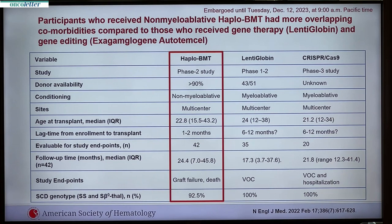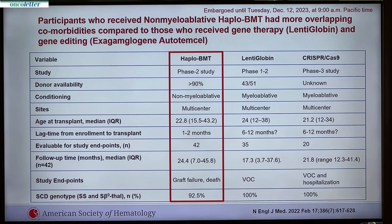All studies were multi-center trials. The median ages across studies were about the same. If you look at lead time — if you need a transplant or gene therapy and you show up with your brother or sister — we can get the haploidentical transplant done in a month. However, the technical expertise required for both lenti-globin and CRISPR gene editing makes these therapies unavailable for up to a year even after screening.